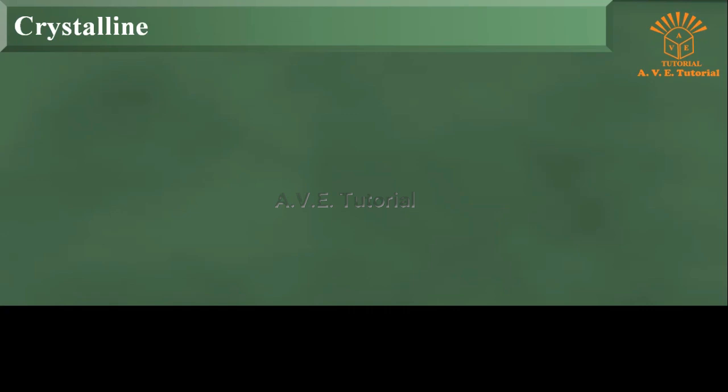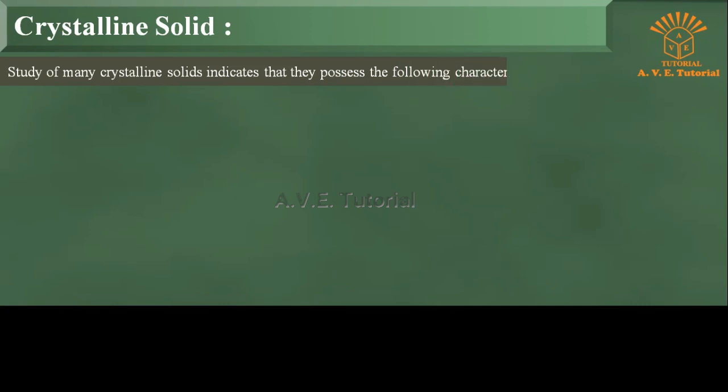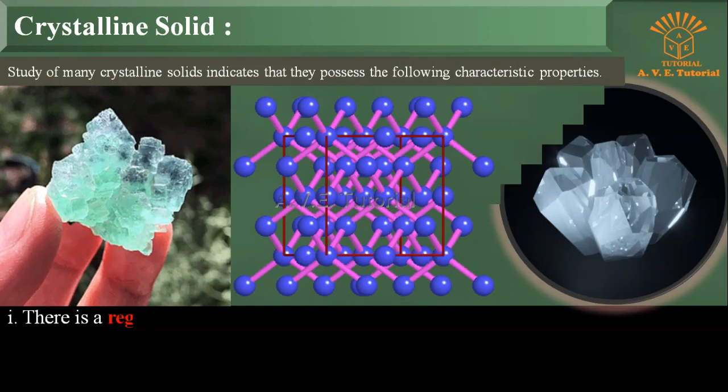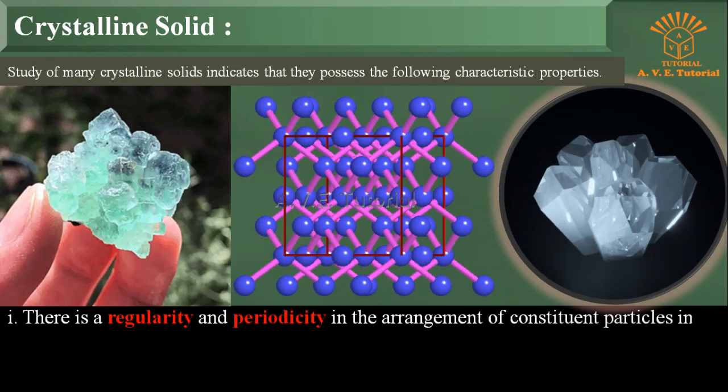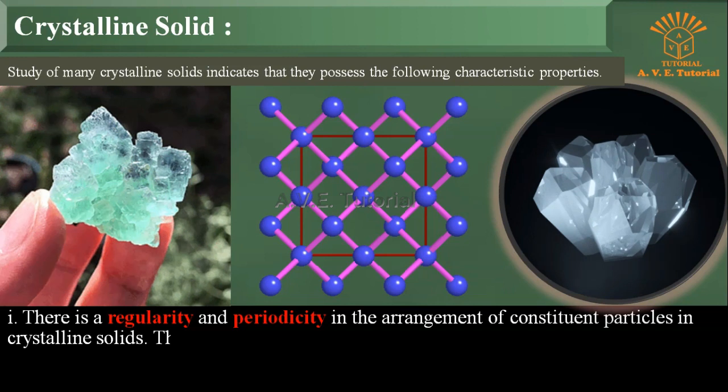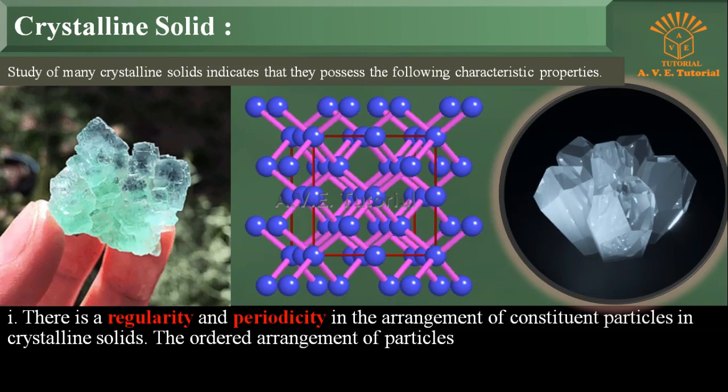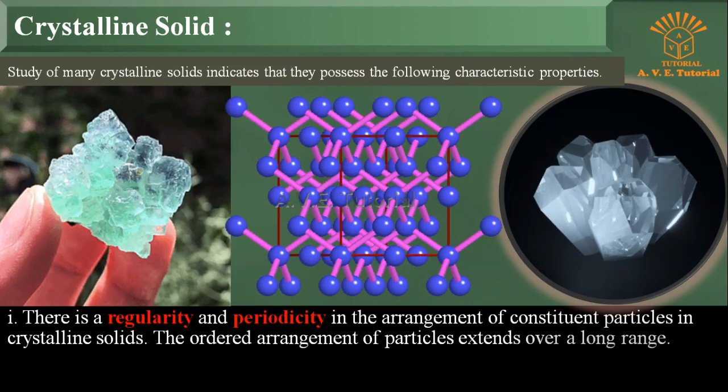Let us see in detail about crystalline solid. Study of many crystalline solids indicates that they possess the following characteristic properties. One: There is a regularity and periodicity in the arrangement of constituent particles in crystalline solids. The ordered arrangement of particles extends over a long range.